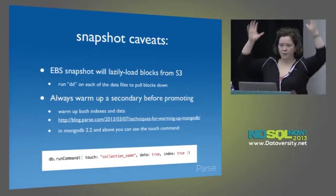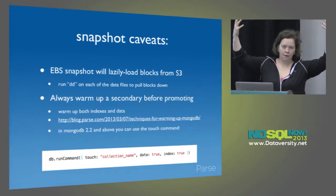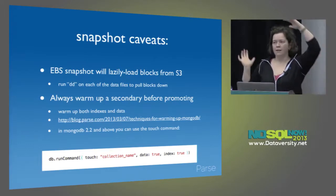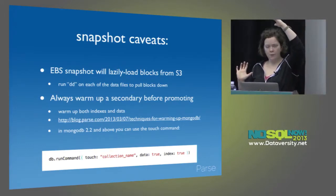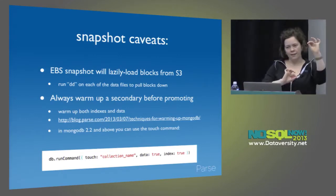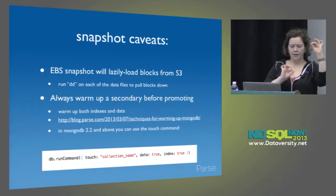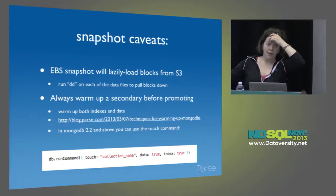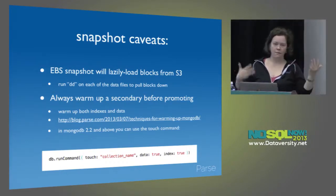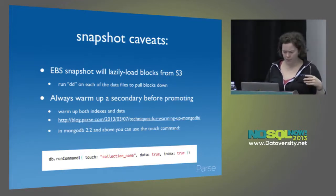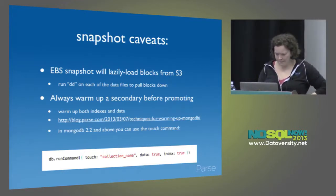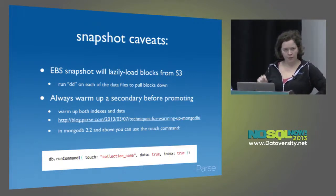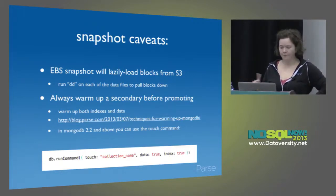The way we warm up is: we have a script that runs on the primary for about an hour, samples db.currentOp every quarter-second, sorts those collections by most frequently accessed, and outputs a list. Then you feed that list of most frequently accessed collections and indexes into a script that you run on your fresh secondary, and it loads them all into memory. If you're running at least 2.2, there's also the built-in mongo touch command that will read a collection and its indexes into memory.